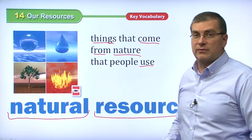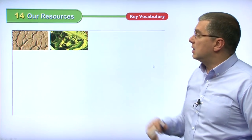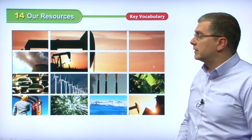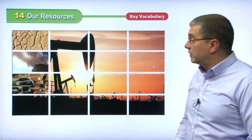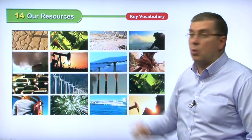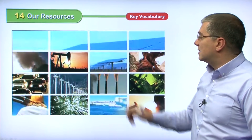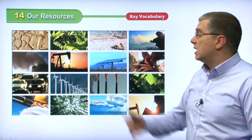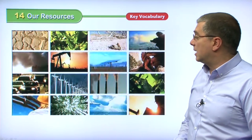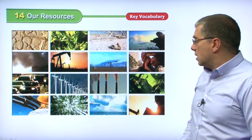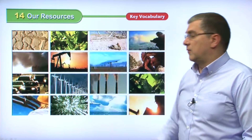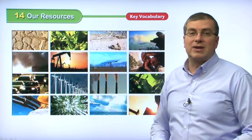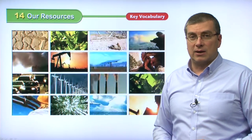There are many types of natural resources. We have a video showing many different types. Here is one very important natural resource — oil. But we can see many other types too. Sunlight is a natural resource; we use that as solar energy. Also wind energy. We use trees for wood. There are many, many different types of natural resources that we get from nature.